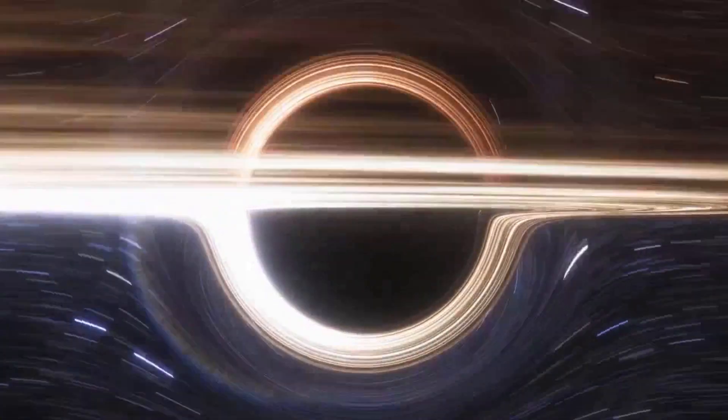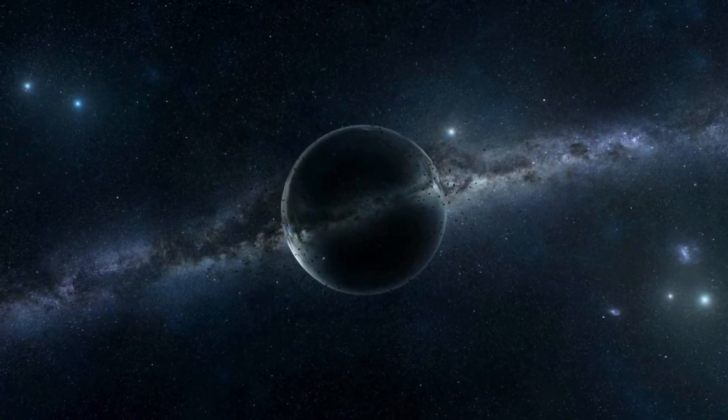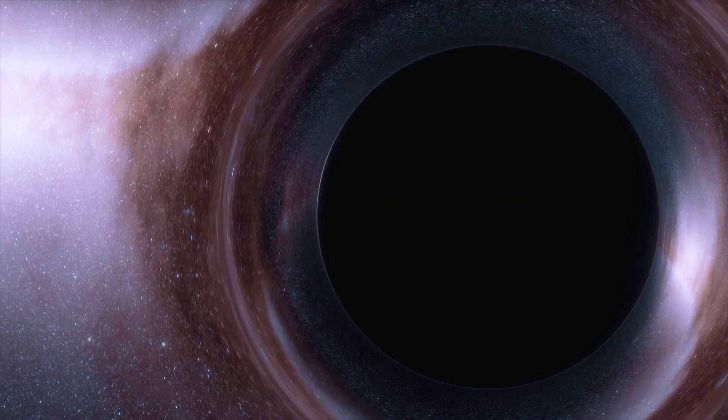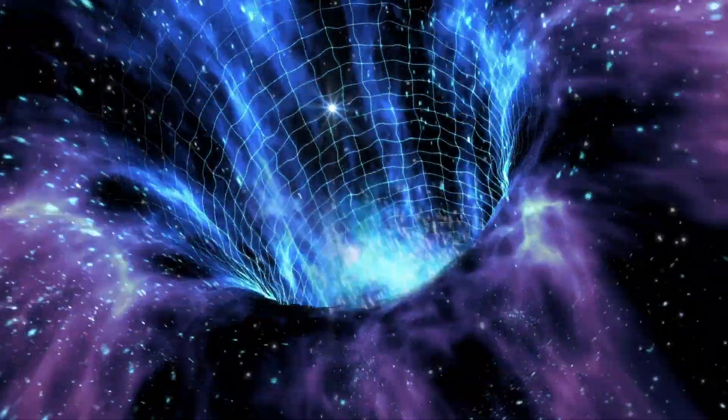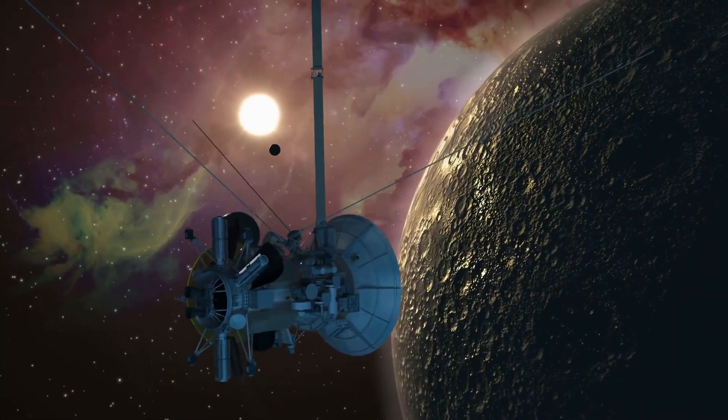Astronomers have discovered a black hole closer to Earth than any other previously found. It's about 10 times as massive as our Sun and is located just 1,600 light years away, rather nearby on a cosmic scale.